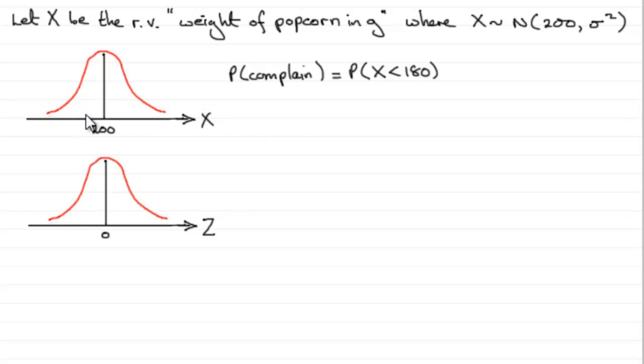So we need to work out the area to the left of 180. We'll just mark that in on here, and we can project this value down onto our standardized graph. We're looking then for this particular Z value here, which I'm going to call Z2 because I used Z1 in the earlier part.